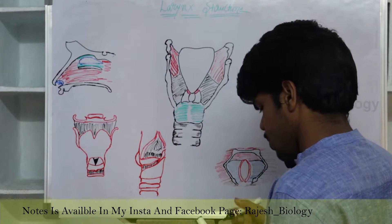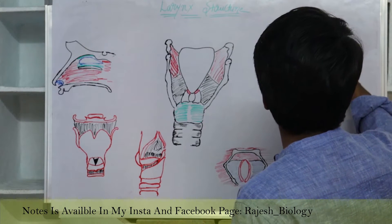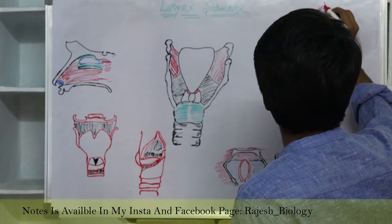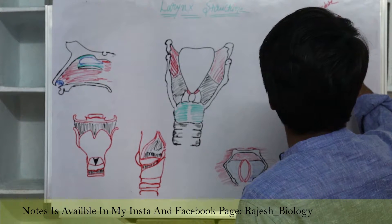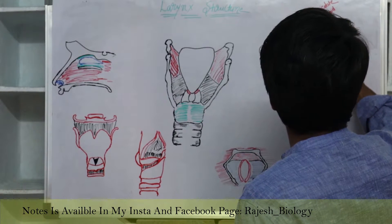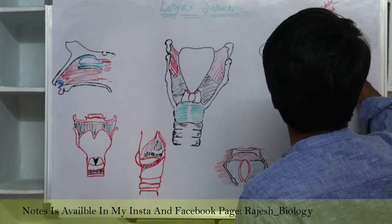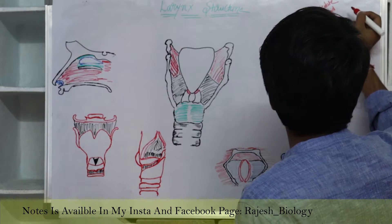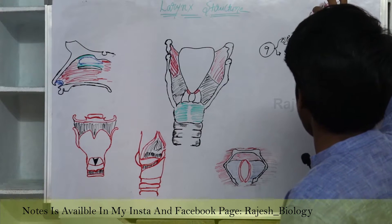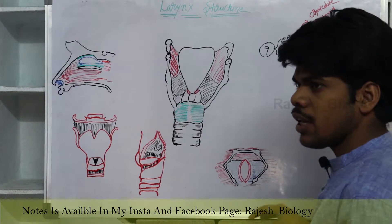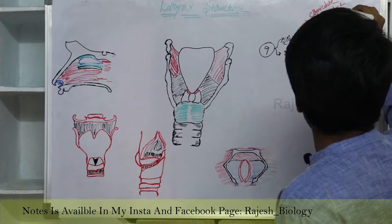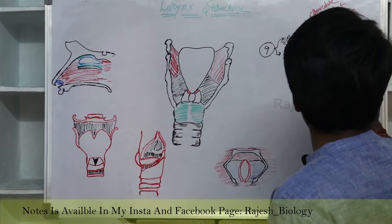The three paired cartilages are corniculate, arytenoid, and cuneiform cartilages. So corniculate, arytenoid, and cuneiform are the three paired cartilages, and epiglottis, thyroid, and cricoid are the three unpaired cartilages. Three paired times two equals six, plus three unpaired equals nine cartilages total.